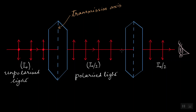So the intensity of the polarized light will be half of I₀. How does this intensity of light transmitted by the analyzer vary? It varies as the cosine of the angle between the axis of the analyzer and the axis of the polarizer.